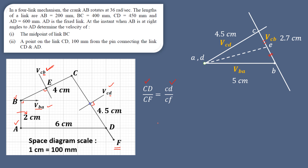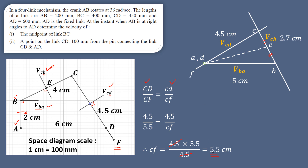CD on the space diagram is 4.5 cm, and CF is 4.5 + 1 = 5.5 cm. On the velocity diagram, cd also happens to be 4.5 cm. So cf = (4.5 × 5.5) / 4.5 = 5.5 cm. Therefore point F lies at a distance of 5.5 cm from C on the velocity diagram. Extend the line CD and mark F at 5.5 cm from C. F is already connected to the fixed point, so no further connection is needed.